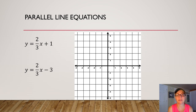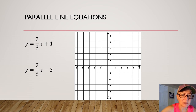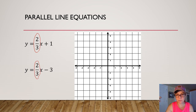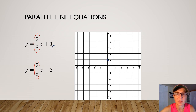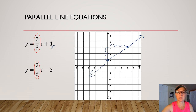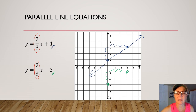In this example, we have a set of parallel line equations. We can tell that they're parallel because the slope is the same for both. Remember, when you have y equals mx plus b, the coefficient on x is the slope. The first equation has a y-intercept of one and the slope is two thirds, so I go up two and over three. There's my second point; I connect them with a straight line. The second equation has a y-intercept of negative three, so I plot negative three on the y-axis, go up two and over three, and connect those with a straight line.